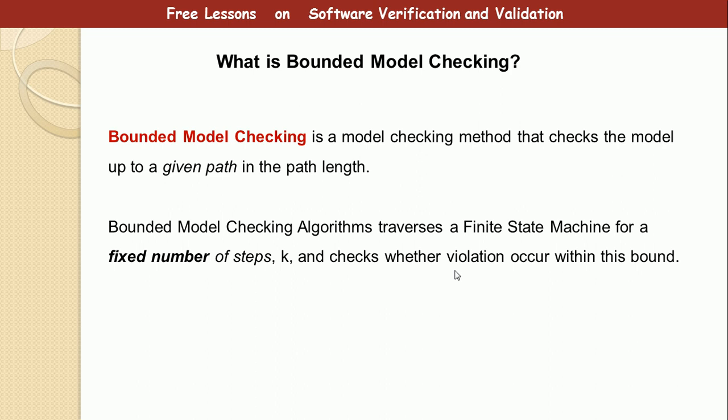So you have to divide the model space into definite paths that you can check up to a given length. The algorithms for bounded model checking traverses a finite state machine for a fixed number of steps. So if we have 20 paths in the finite state machine, you can take, let's say seven or eight paths and then check if violations are found within this particular bound.